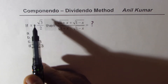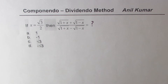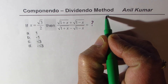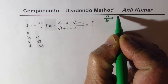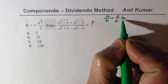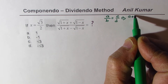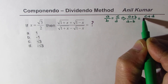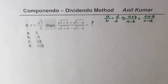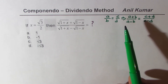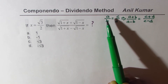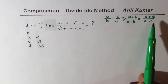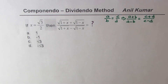To begin with, let me give you the property of componendo and dividendo which we are going to use in solving the three examples. If the ratio of a to b is equal to c over d, then we could always write: (a plus b) divided by (a minus b) is equal to (c plus d) divided by (c minus d). This property is popularly known as componendo and dividendo.